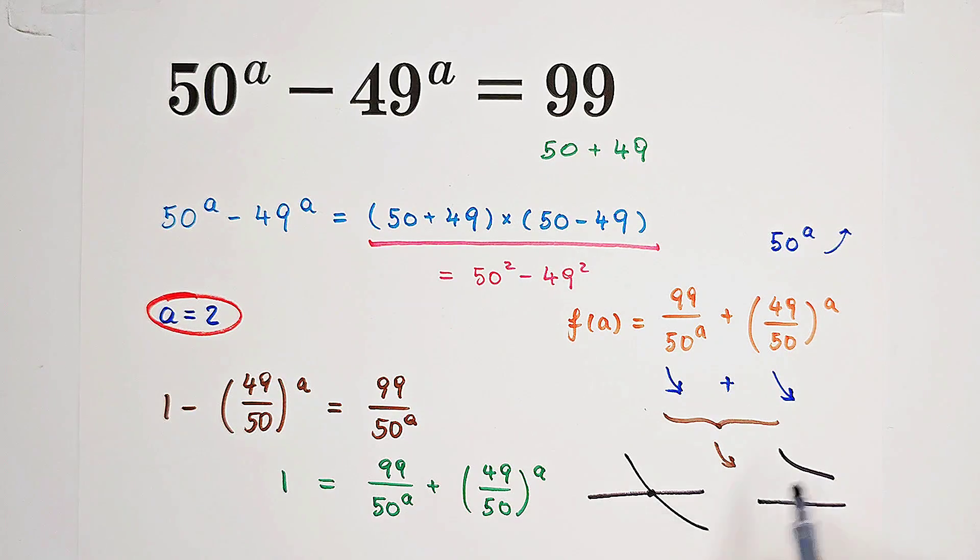However, from the property, we also know that there exists at most one intersection. So, what can we get? We can say that there is only one intersection. And this intersection is at A equals 2.